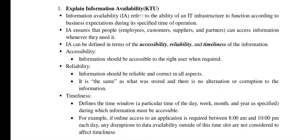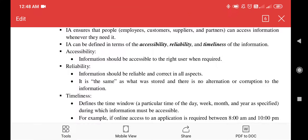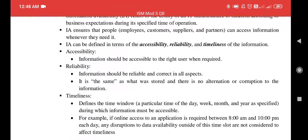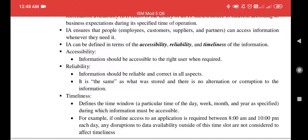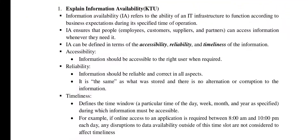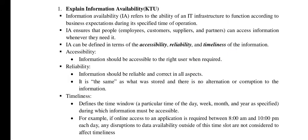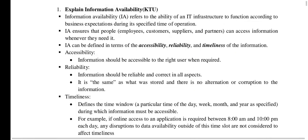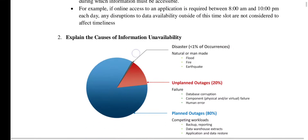Information availability (IA) ensures that people can access information whenever they need it. IA can be expressed in terms of accessibility, reliability, and timeliness — each of which is explained below. Next are the causes for information unavailability.